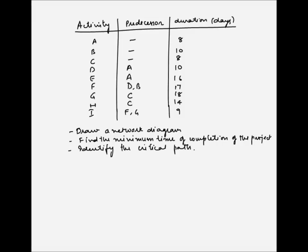Welcome to another example of network analysis using the critical path method. In this example we have been given the activities of the project, which is from A to I, and we have been given the predecessors for each of these activities. We have also been given the duration in days for each activity. We will draw a network diagram, find the minimum time of completion, and identify the critical path.